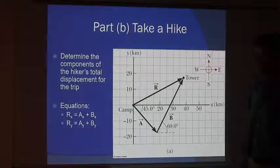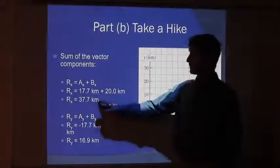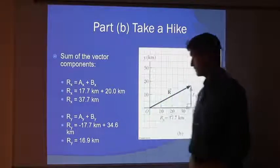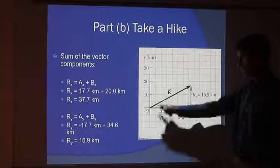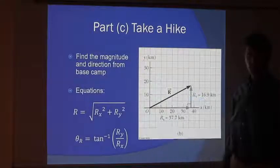Alright? Add the x's to the x's, the y's to the y's. Here's my total trip in the x direction, my total trip in the y direction. What if I ask the question, how far did I go? What is the total length of this vector R? There's where we use the Pythagorean theorem.